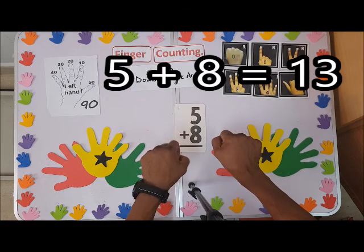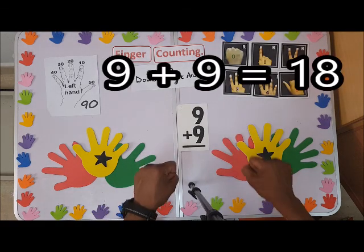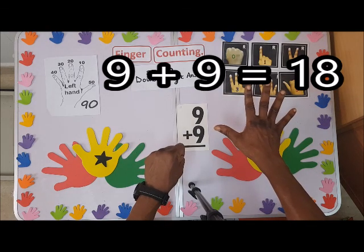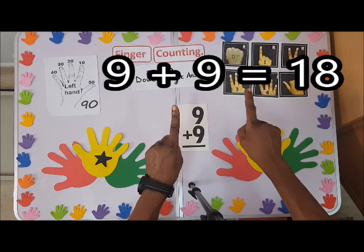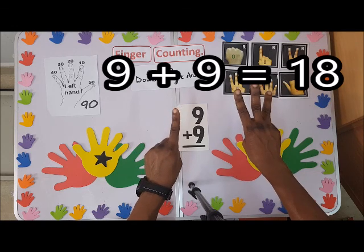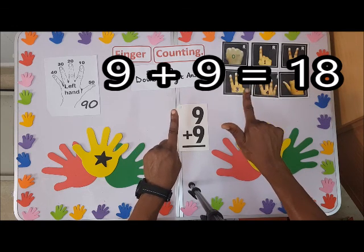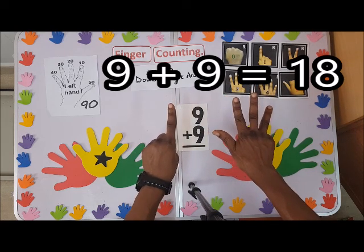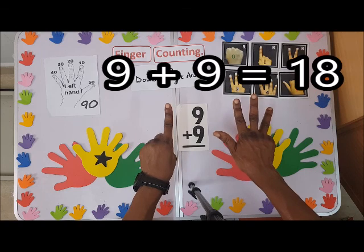We have nine plus nine. Watch out. This is nine: one, two, three, four, five, six, seven, eight, nine. The answer is what? Eighteen. Eighteen.